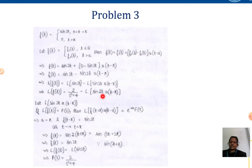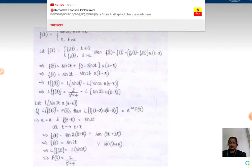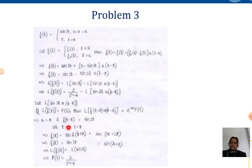Now consider L{sin 2t · u(t − π)}. Using L{f(t − a) · u(t − a)} = e^(−as) · F(s) with a = π: f(t − π) = sin 2t means f(t) = sin 2(t + π) = sin(2t + 2π) = sin 2t (by periodicity). So F(s) = L{sin 2t} = 2/(s² + 4). Therefore L{sin 2t · u(t − π)} = e^(−πs) · 2/(s² + 4).